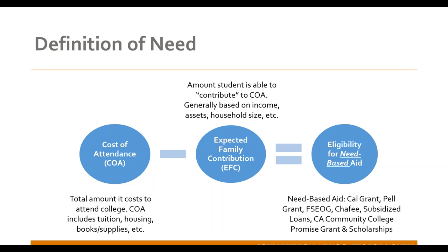Some aid is need-based. To determine need, you take the cost of attendance — including tuition, housing, books, supplies — and subtract the Expected Family Contribution, which is the amount the FAFSA determines the student can contribute based on income, assets, household size, and other factors. For those with parental contribution, that's essentially what this is. The result is your eligibility for need-based aid, which includes grants, subsidized loans, fee waivers, and some scholarships.